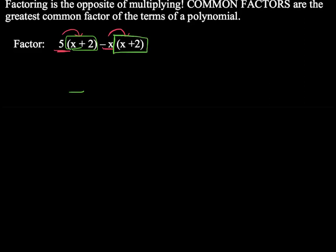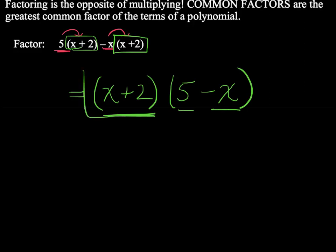So I can rewrite this as x plus 2, my common factor, times 5 minus x. So x plus 2 is multiplying 5 and x plus 2 is multiplying negative x. Okay, in fact, that's it. That's all.